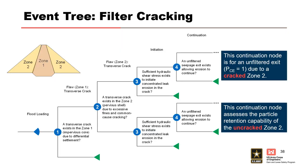This slide provides suggested guidance for assessing the likelihood of holding a crack based on fines content and cementation. The descriptors and probabilities should be used to help develop a list of more and less likely factors during a team elicitation of probability estimates. This slide illustrates how the generic event tree can be adapted if filter cracking is a concern. In this example, a node is added to assess the likelihood of common cause cracking in the zone 2 or pervious shell due to excessive fines. If zone 2 is cracked, an unfiltered exit exists in the next node; otherwise, the continuation node assesses the particle retention capability for the uncracked zone 2.